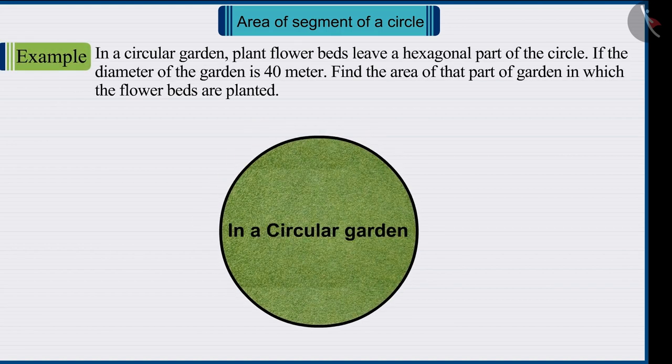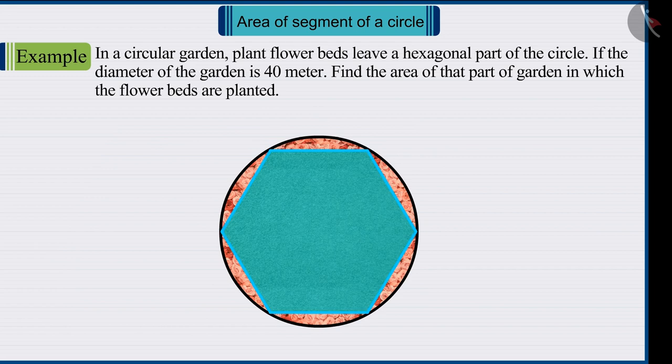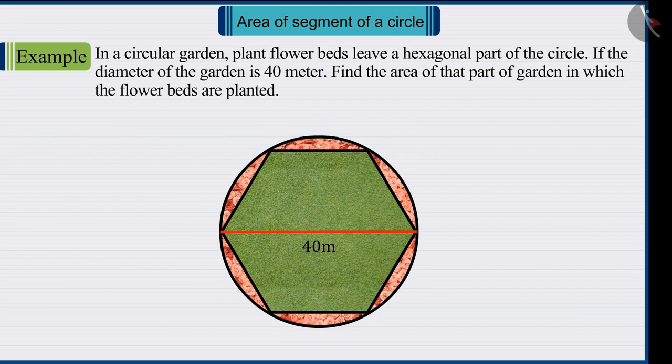In a circular garden, plant flower beds leave a hexagonal part of a circle. If the diameter of the garden is 40 meters, find the area of that part of the garden in which the flower beds are planted.